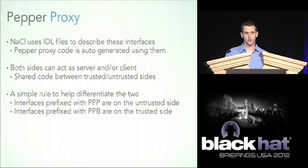There's a simple rule to differentiate interfaces in the Native Client source code: interfaces prefixed with PPP are on the untrusted plug-in side, while interfaces prefixed with PPB are implemented on the trusted browser side — B standing for browser. We're most interested in vulnerabilities in the PPB interfaces on the trusted side, since that's the area we want to start executing code in.